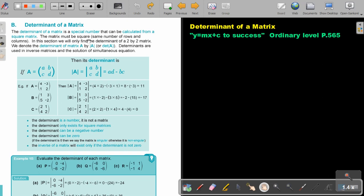In this section, we will only find the determinant of a 2 by 2 matrix. We denote the determinant of a matrix A by making vertical lines around the A or we write DET and then we can make the brackets A.